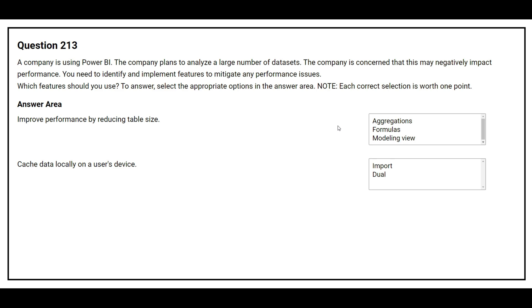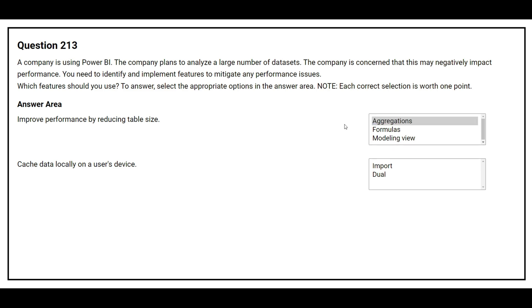Question 213: A company is using Power BI and plans to analyze a large number of datasets. The company is concerned this may negatively impact performance. You need to identify and implement features to mitigate performance issues. The first feature question is 'improve performance by reducing table size' — the correct answer is Aggregations. The second question is 'cache data locally on the user's device' — the correct answer is Import.